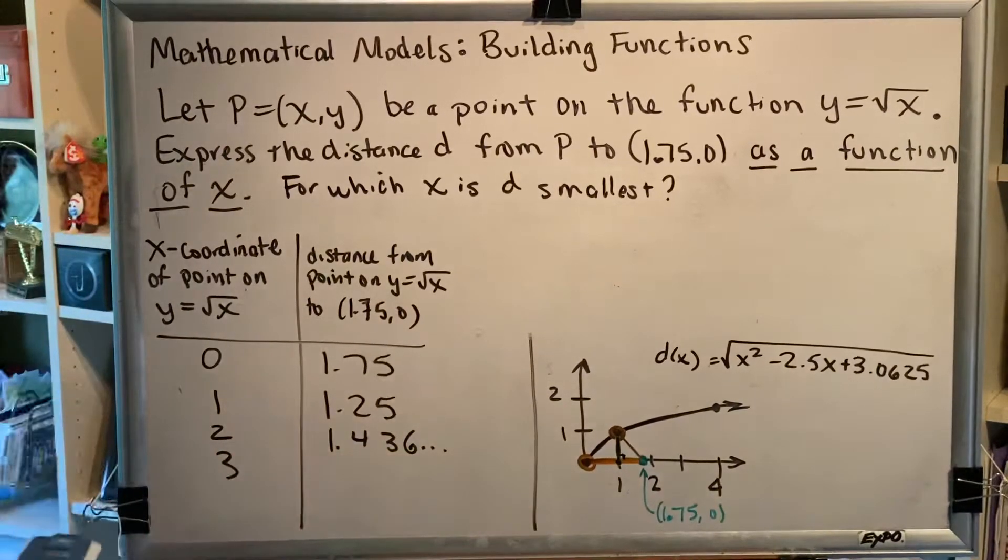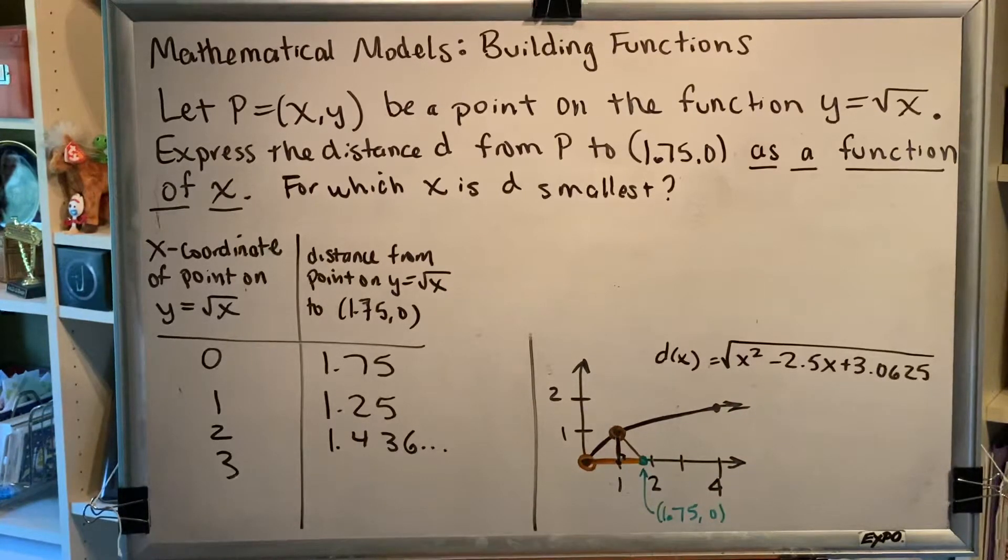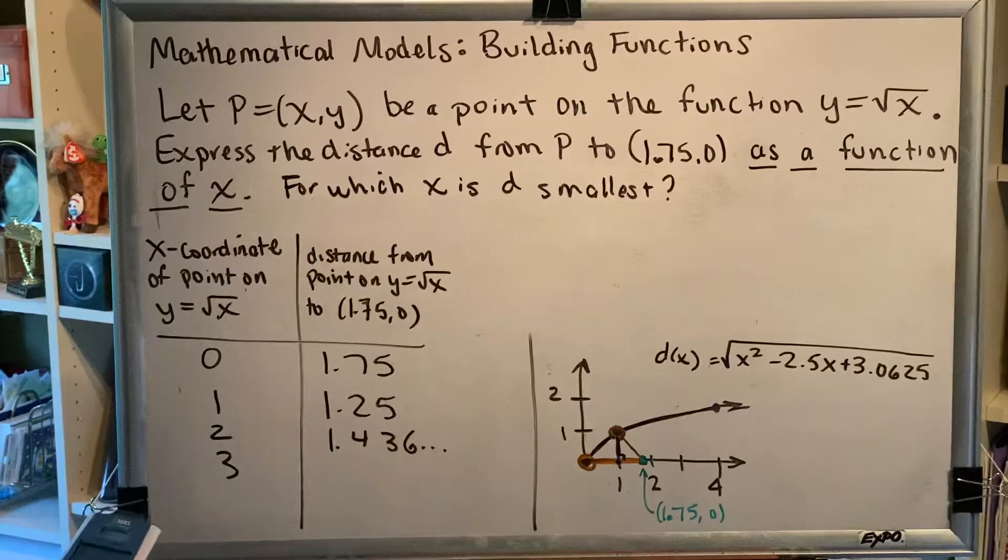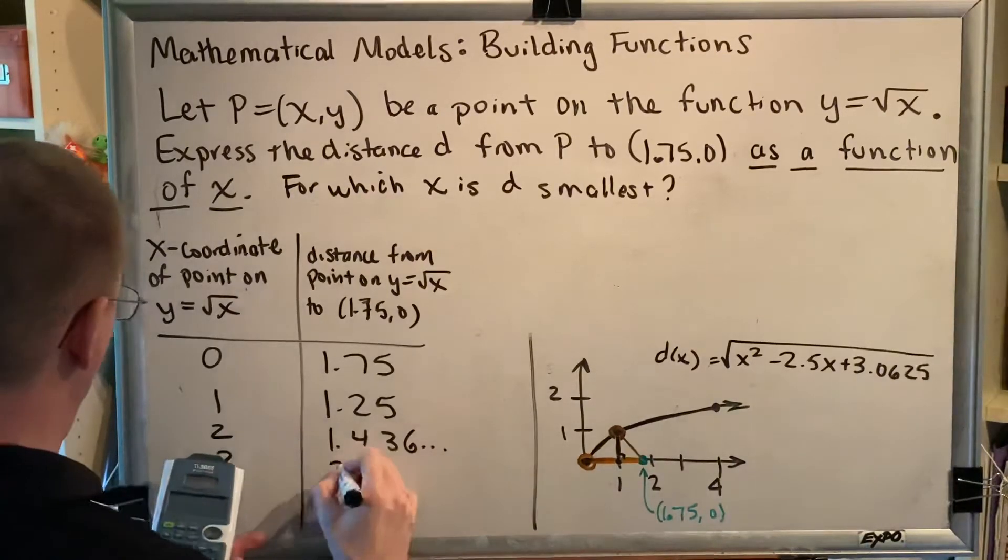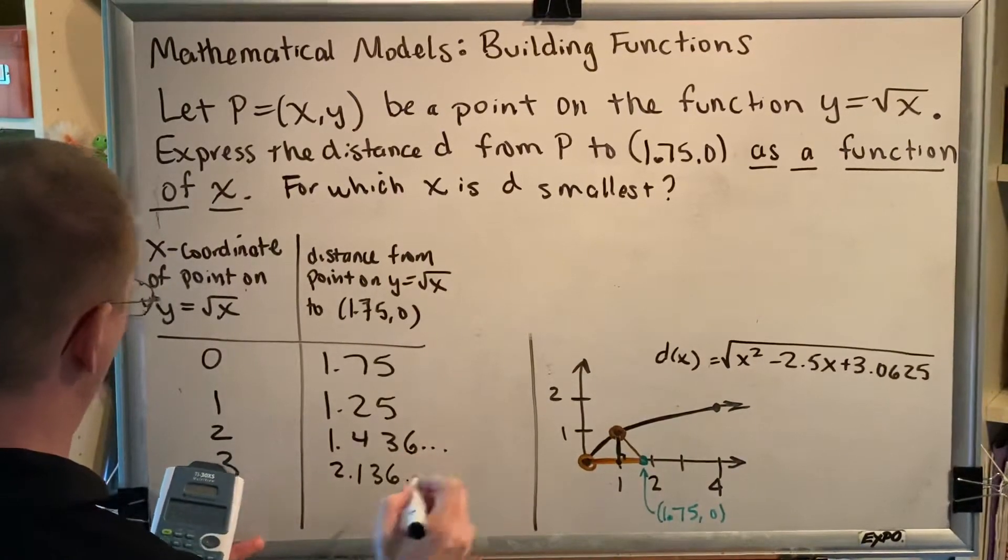Then I'll let x be 3, plug that in, and I get 2.136.